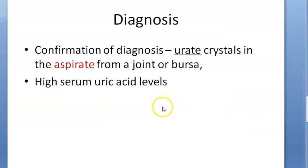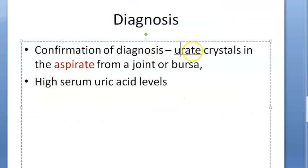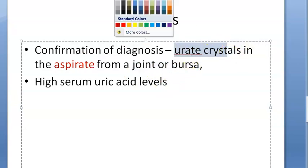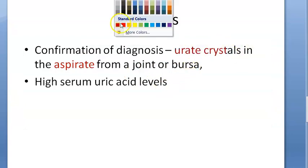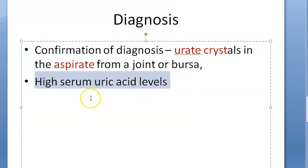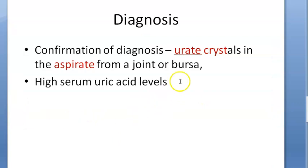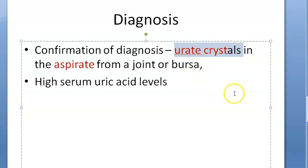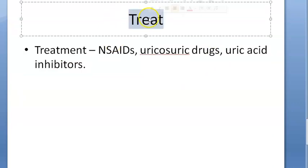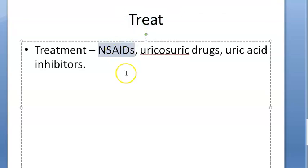For diagnosis, you can aspirate content from the joint or bursa and detect urate crystals. In the blood, you will see high uric acid levels. When you aspirate from the inflamed joint or bursa, you will be able to demonstrate urate crystals.